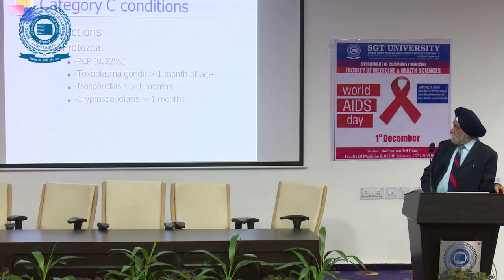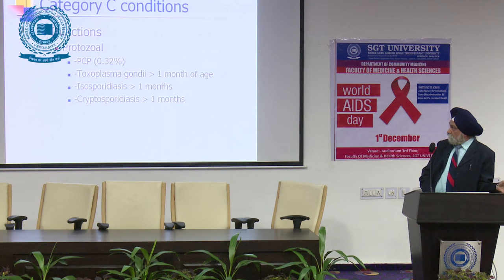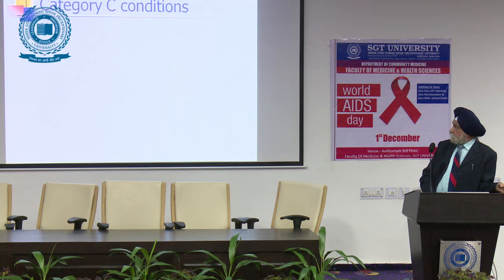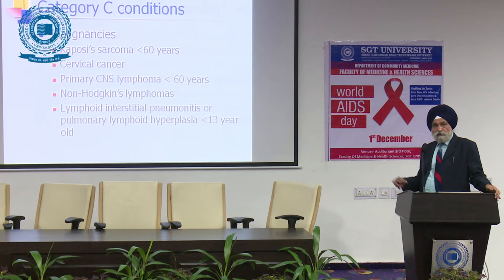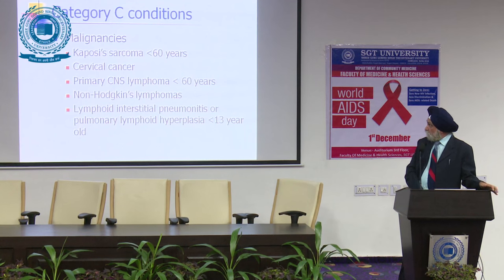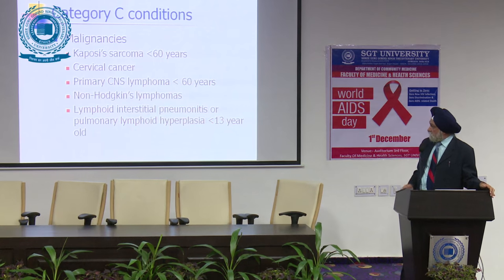Among fungal infections: esophageal candidiasis, tracheobronchial candidiasis, histoplasmosis, and cryptococcosis. PCP pneumonia was the first condition detected in the original AIDS patients — homosexuals were found to have PCP pneumonia and were then investigated and found positive. Other Category C conditions include toxoplasmosis, cryptosporidiasis of more than one month duration, PML, HIV dementia complex, and malignancies such as Kaposi's sarcoma, cervical cancer, primary CNS lymphoma, non-Hodgkin's lymphoma, and lymphoid interstitial pneumonitis in those under 13 years.